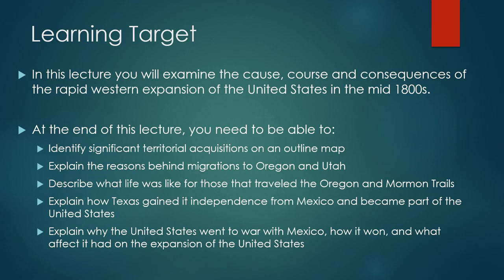At the end of this lecture you need to be able to identify significant territorial acquisitions on an outline map, explain the reasons behind migrations to both Oregon and Utah, describe what life was like for those that traveled the Oregon Trail and Mormon Trail, explain how Texas gained its independence from Mexico and became part of the United States, and explain why the United States went to war with Mexico, how it won that war, and what effect it had on the expansion of the United States.